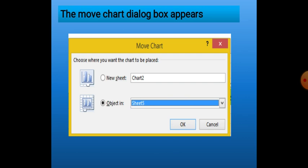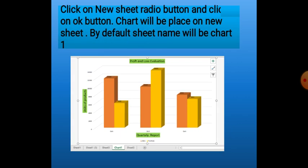In this dialog box there are two options: New Sheet or Object In. By default, Object In is selected. If you want to place a chart on a new sheet, we select the New Sheet option and then give a name to the sheet — Chart 1, Chart 2, etc. By default it is written as Chart 1. If we like, we can change the name and then click OK.